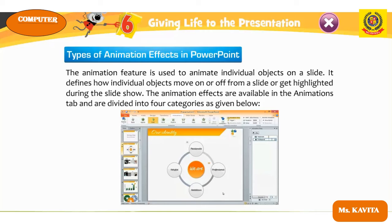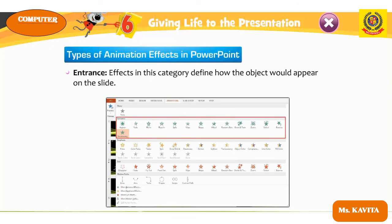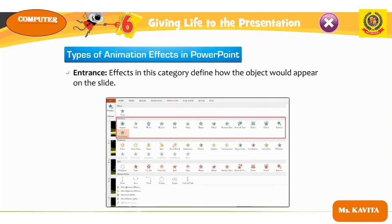Types of animation effects in PowerPoint: the feature is used to animate individual objects on a slide. It defines how individual objects move on or off a slide and get highlighted during the slide show. Animation effects are available in the animation tab and are divided into four categories.